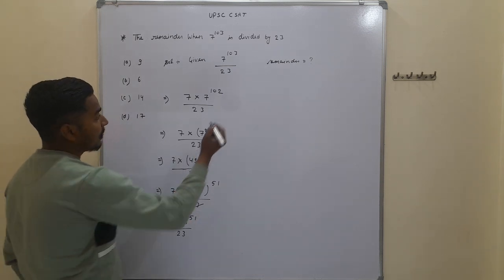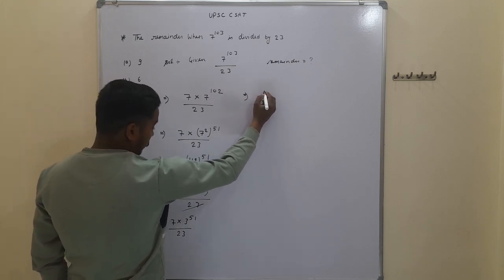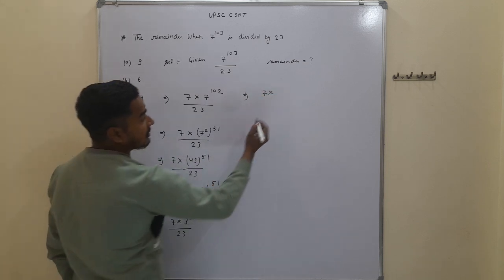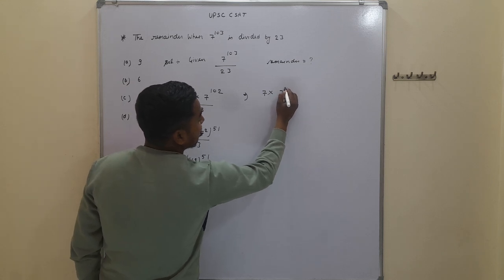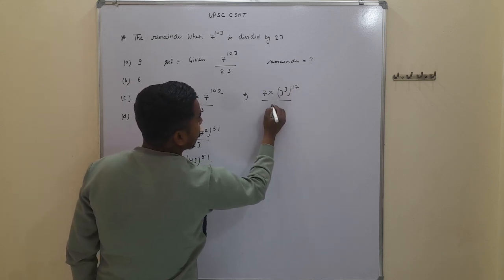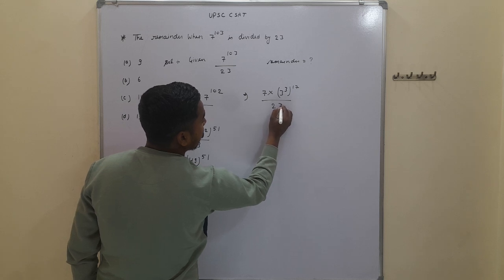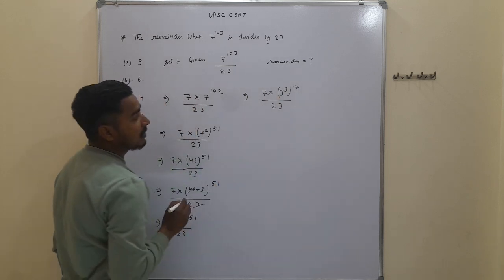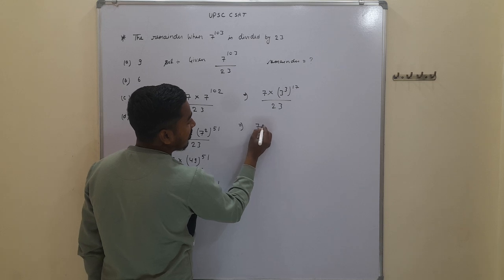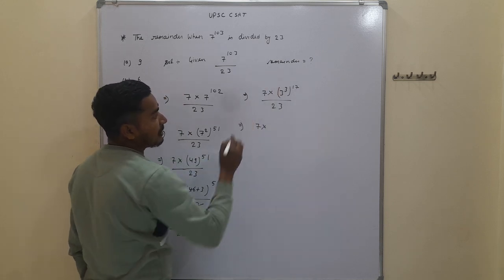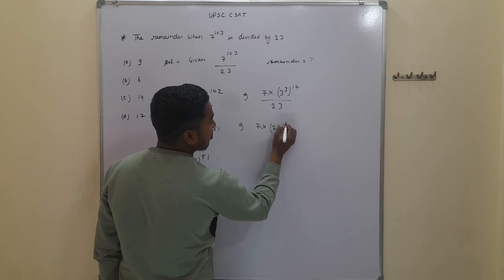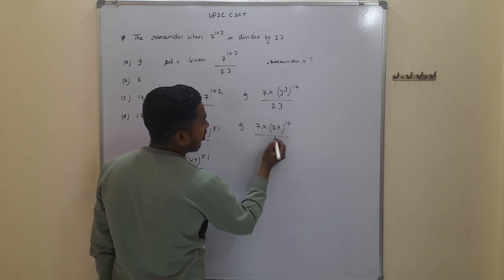Further, 3 to the power of 51 is written as 3 to the power of 3 into 17, since 3 times 17 is 51. So we have 7 into (3^3)^17, upon 23.